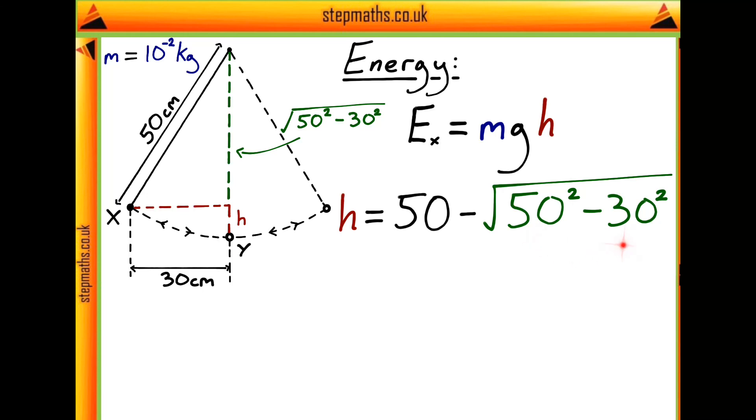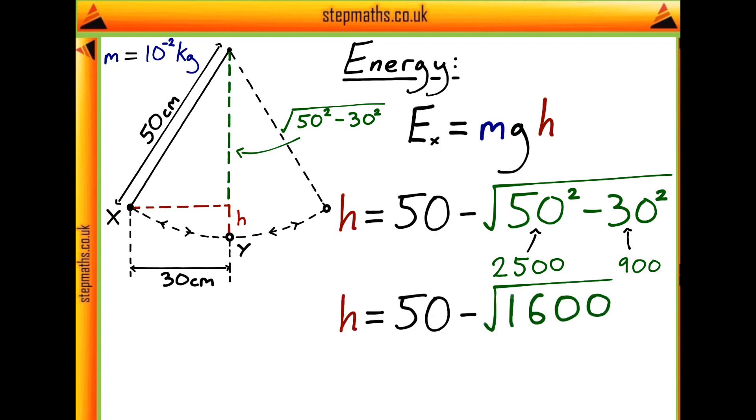Now, what we want to do is try and find out what each of these values are going to be. So the easiest way to do this is probably with standard form. They come out to be 50 squared as being 2,500 and 30 squared as 900. Taking these away from each other, we get that our height h is equal to 50 centimetres take away the square root of 1,600.